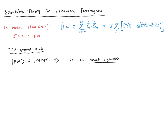We know this ferromagnetic state is an exact eigenstate. Applying the Hamiltonian operator to this ferromagnetic state gives the same state back with an eigenvalue — the ground state energy, which we worked out in the previous lecture as simply NJ/4, where N is the number of sites going to infinity. The energy of all other states will be greater than this — they are excited states and their energy should be measured with respect to this ground state energy.